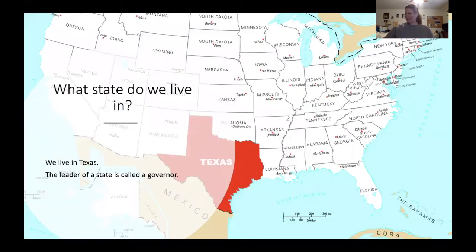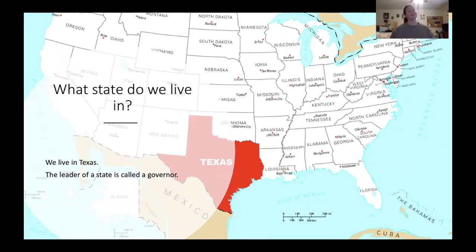We live in what state? Texas. If you look at the picture behind, it's a map of the United States and Texas is red. Texas is this kind of weird shape — it's pretty big. It's the second biggest state, and if I don't want to write Texas all the way out, I can just put TX. That's the state abbreviation. So we live in Texas, and the leader of a state is a governor. In a city we have a mayor; in a state we have a governor.